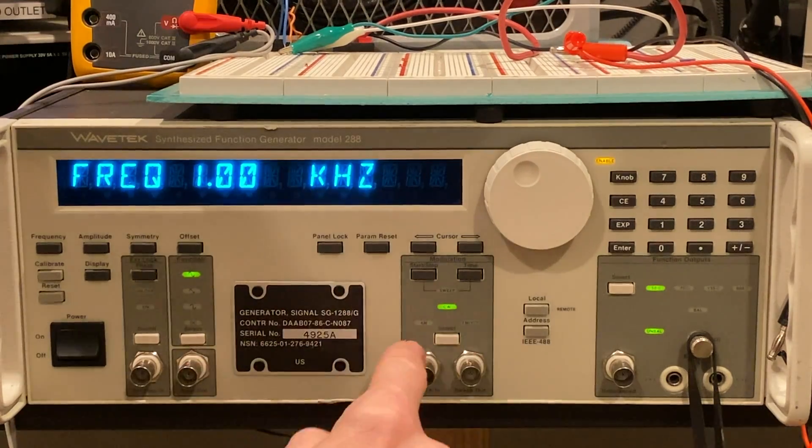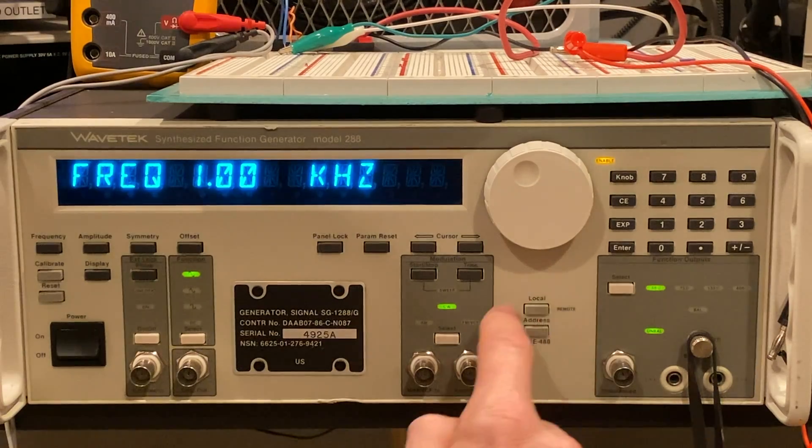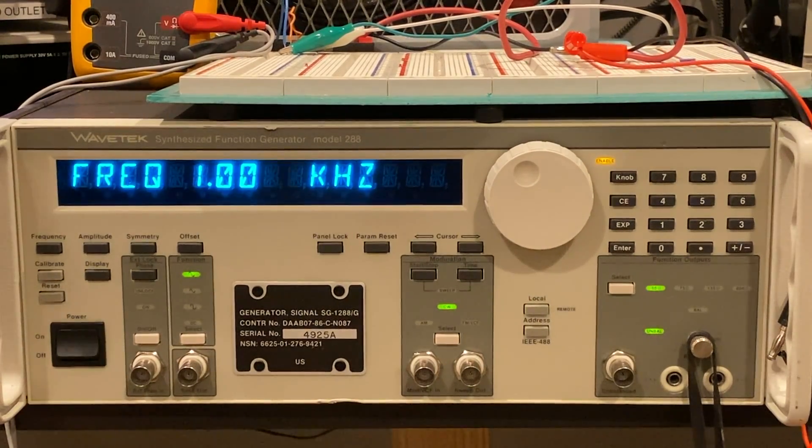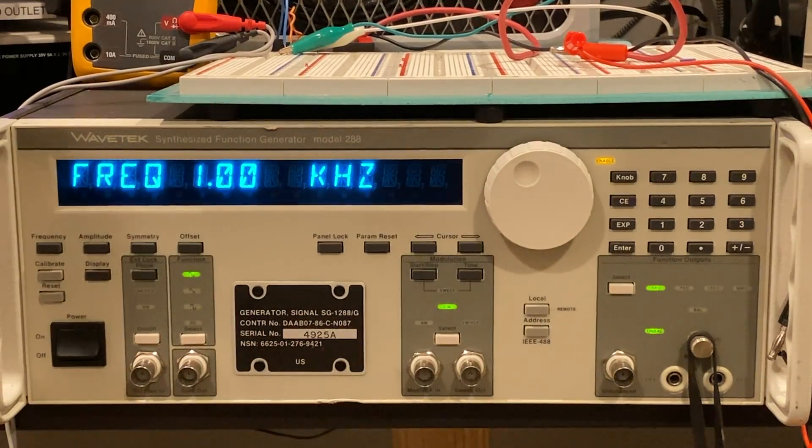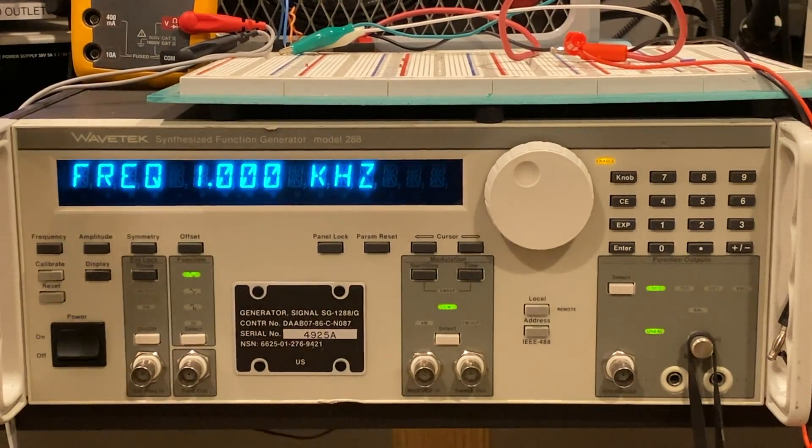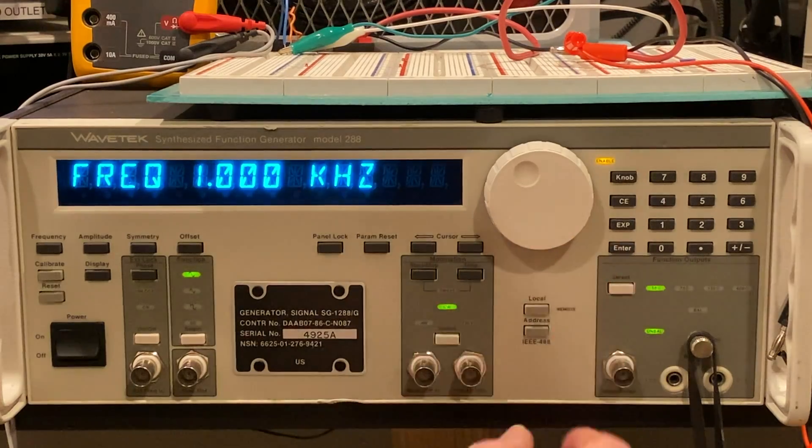Here we have local and address. This is if you have this unit hooked up to a GPIB cable and let's say you want a computer to operate this and you want to control this from a computer. There's a cable output on the back that allows you to talk through the GPIB format.